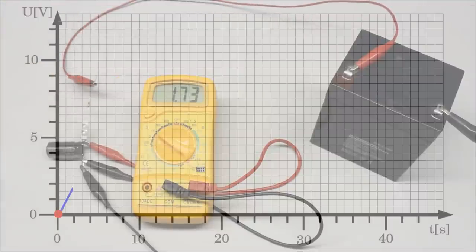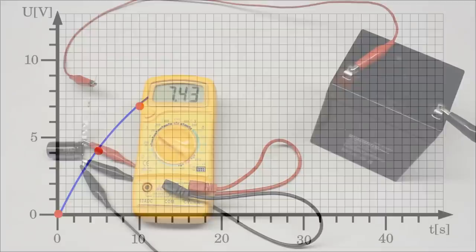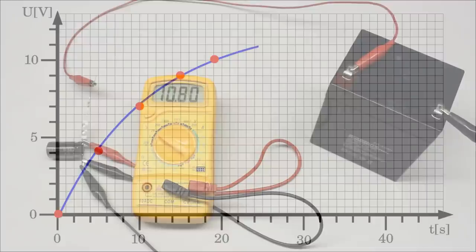In the previous video the handling of digital multimeters was treated, so you should be familiar with measuring constant voltages. You can examine variable voltages by doing measurements at given times. Here the charging procedure of a 1000uF capacitor through a 12kΩ resistor is recorded. This proceeding makes sense only if the voltage changes slowly over time.